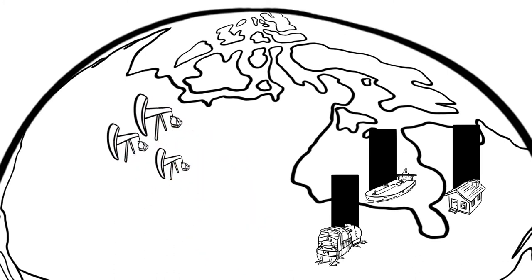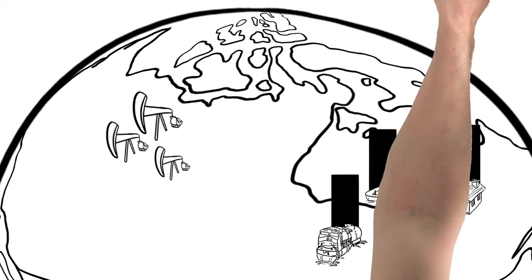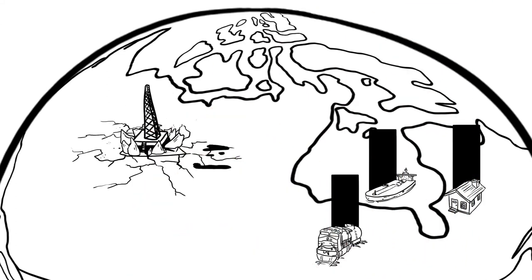But as conventional oil sources run out, big oil companies are shifting to extreme energy sources, like fracking and the tar sands.